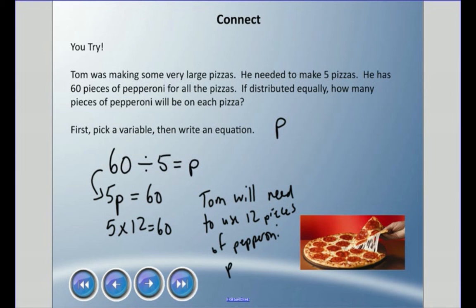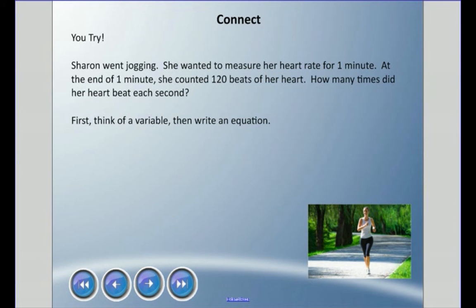And one last one for you to try. Sharon went jogging. She wanted to measure her heart rate for one minute. At the end of one minute, she counted 120 beats of her heart. How many times did her heart beat each second? First, again, I'd like you to think of a variable, then write an equation. Now I am trying to trick you a little bit in this, so watch for that. Pause it there and come back when you have an answer.